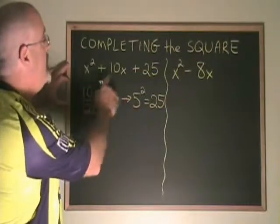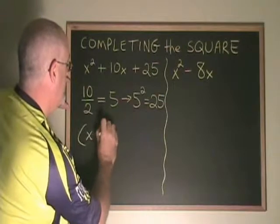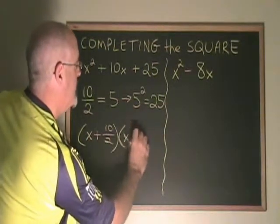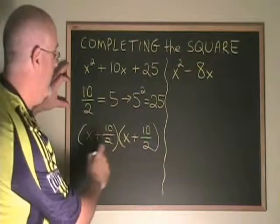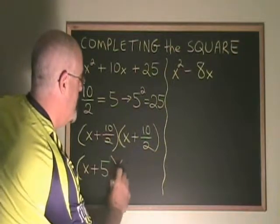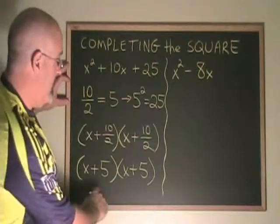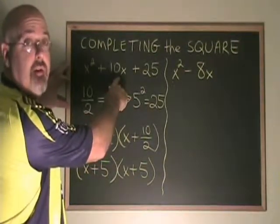That means that the factors of this trinomial should be x plus 10 over 2, x plus 10 over 2. And of course, this simplifies to x plus 5, x plus 5. If we multiply these binomials together, we will indeed get x squared plus 10x plus 25.